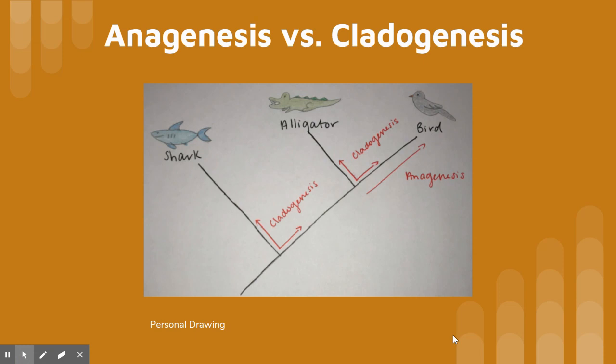This is Mia King's mini exam video 7.1. In a phylogenetic tree, there are different types of evolutionary changes.